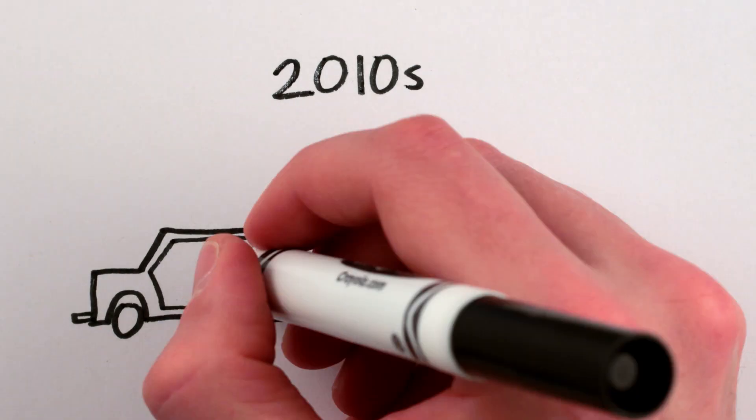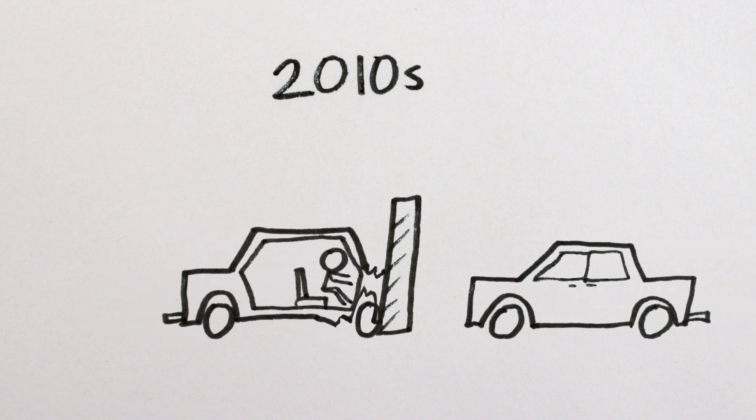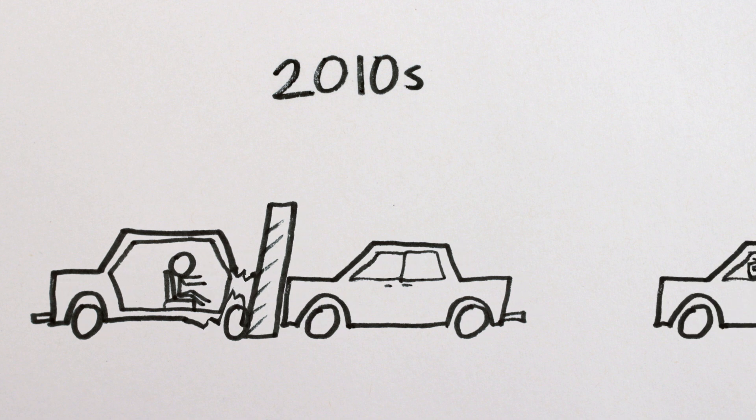Thankfully, engineers have learned to make cars with crunchy crumple zones surrounding a rigid safety cell, because fully rigid cars are not good for fighter pilots or anyone else.